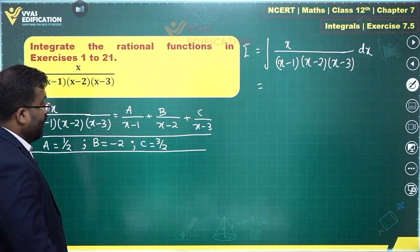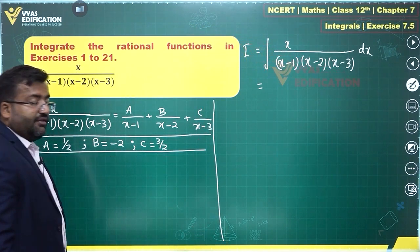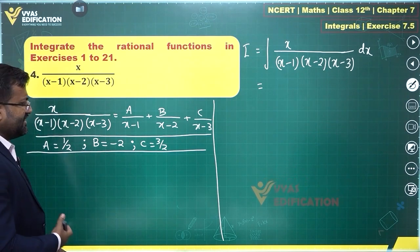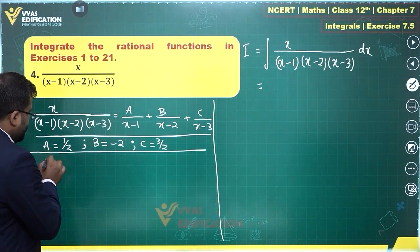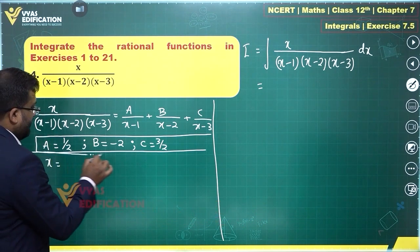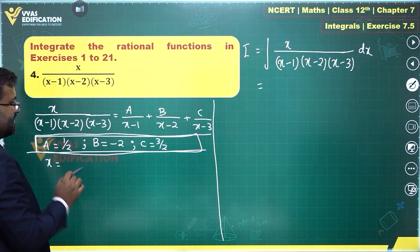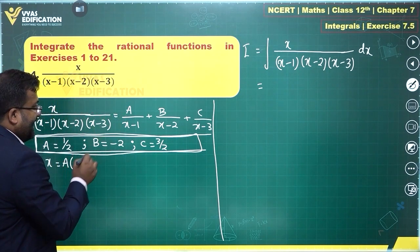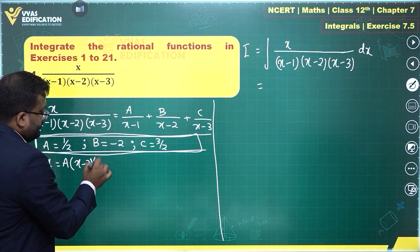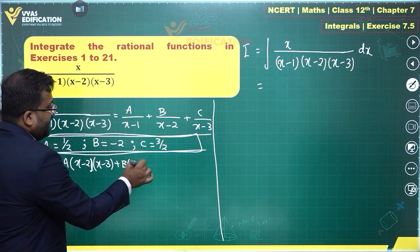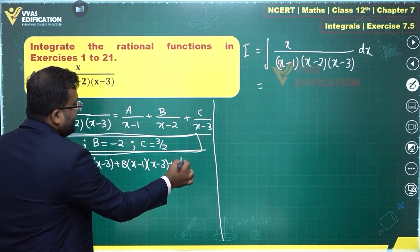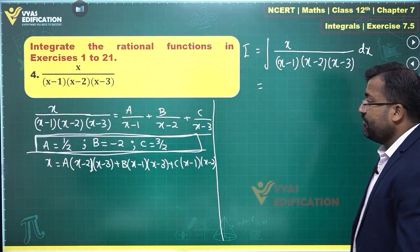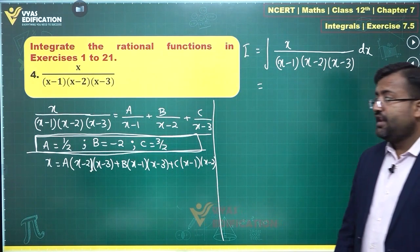This was the shortcut approach. For board examinations, we need a longer approach. We compare the numerators: x on the left-hand side equals A times (x minus 2)(x minus 3) plus B times (x minus 1)(x minus 3) plus C times (x minus 1)(x minus 2). This is obtained by taking the LCM and comparing only the numerators.